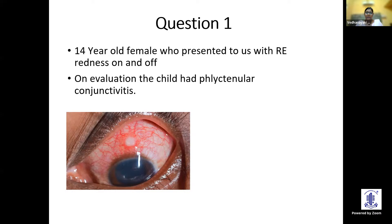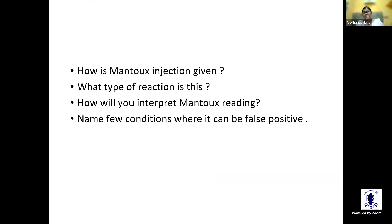Good evening. I thank the iFocus team for this opportunity and I'll start straight away with a very simple OSCE question. Uveitis is a disease where a patient must have a systemic evaluation and diagnosis. The first OSCE question starts with systemic evaluation. This is a 14-year-old female who presented with right eye redness on and off. On evaluation, the child had a phlycten. As a routine we did a systemic evaluation, and the Mantoux was done as a first-line investigation. We got the result after 48 hours.